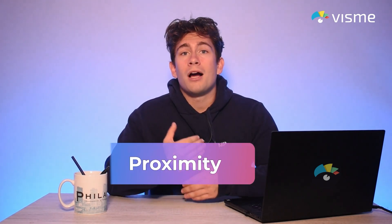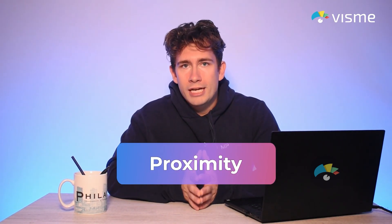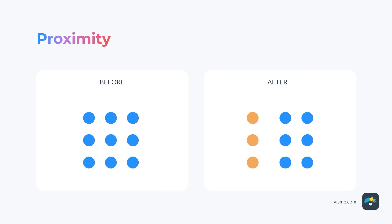The proximity principle states that objects placed closer together are perceived as being more related to each other than those spaced further apart. As you can see in this example, the nine circles on the left are perceived as one group, while the example on the right feels like two groups of three and six circles each.